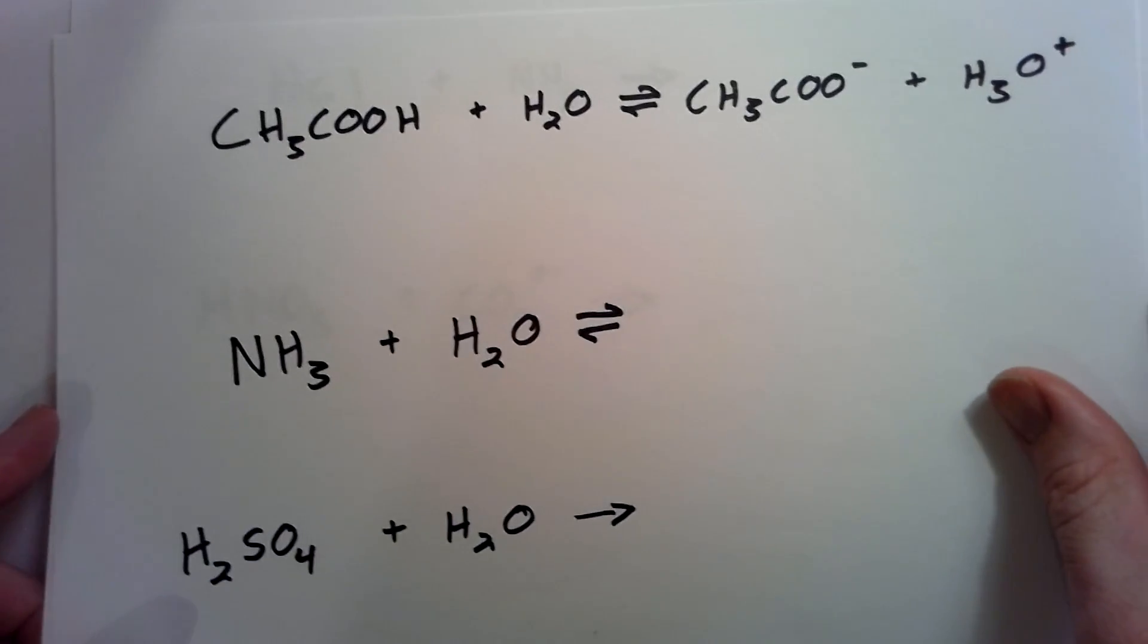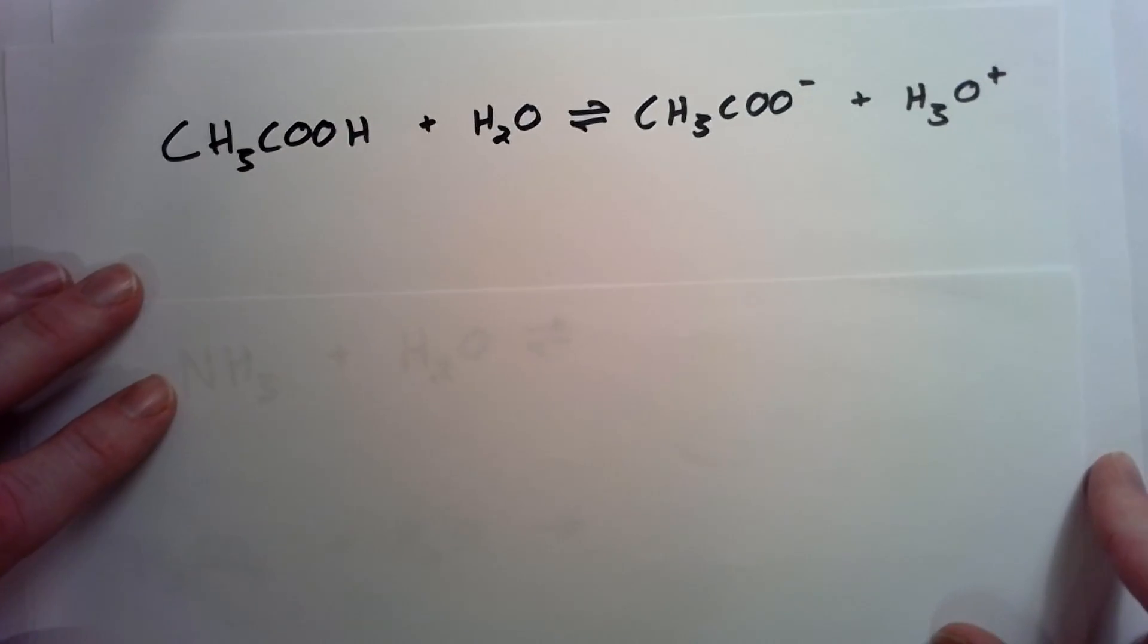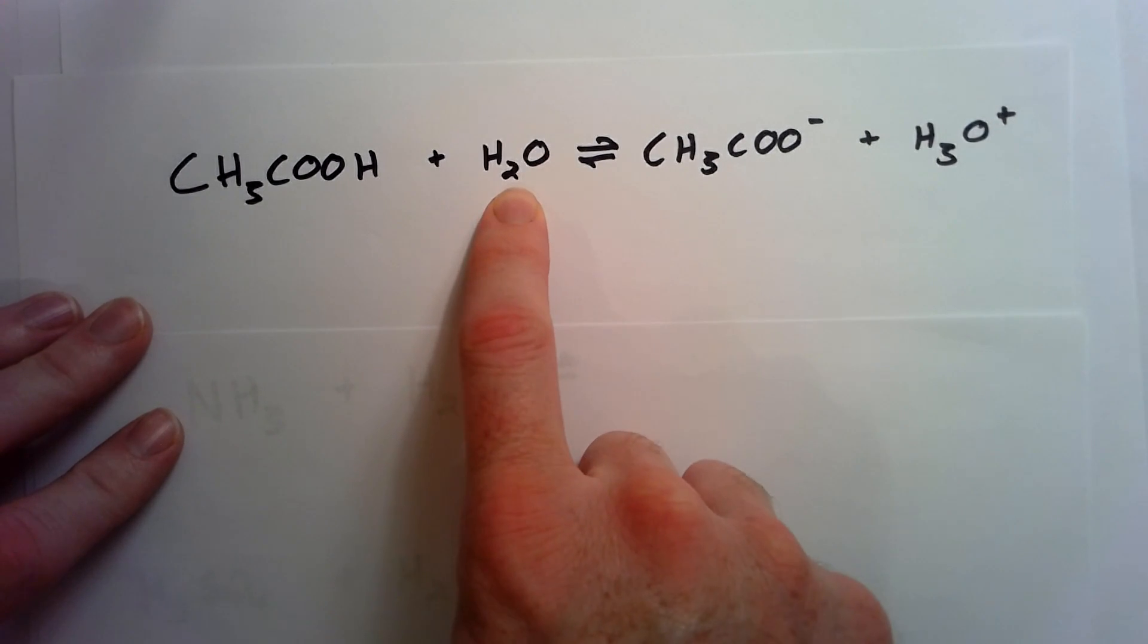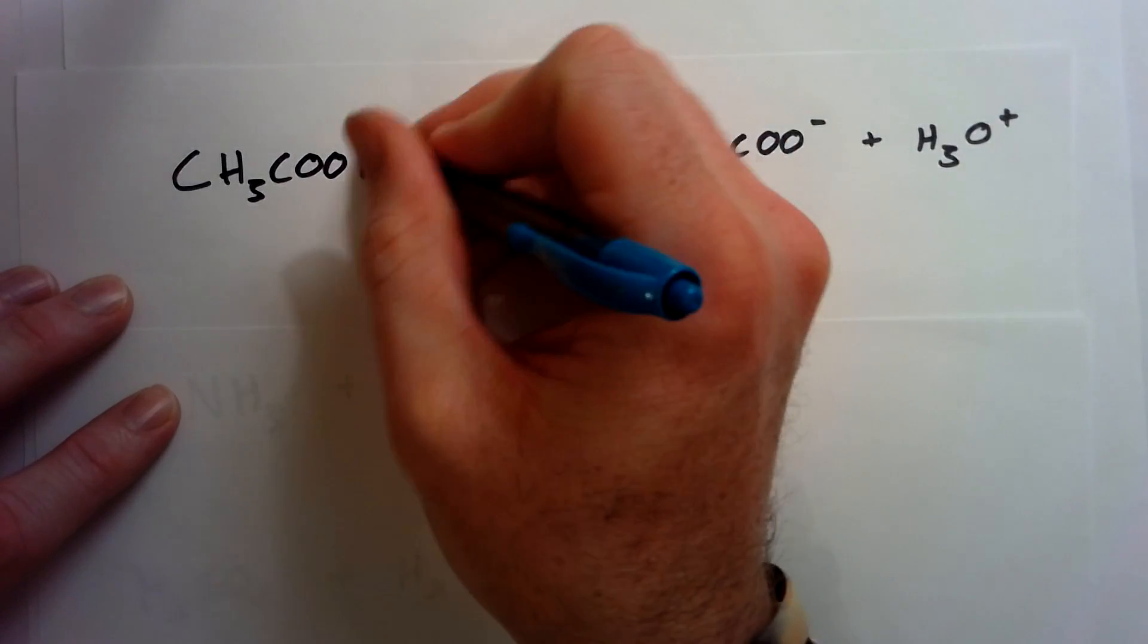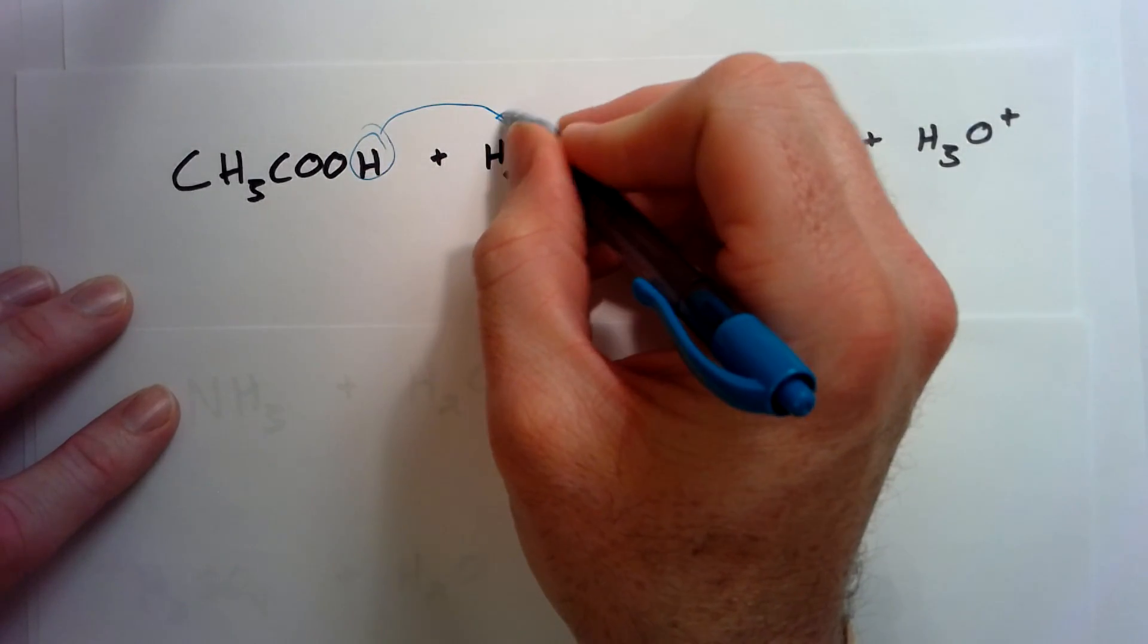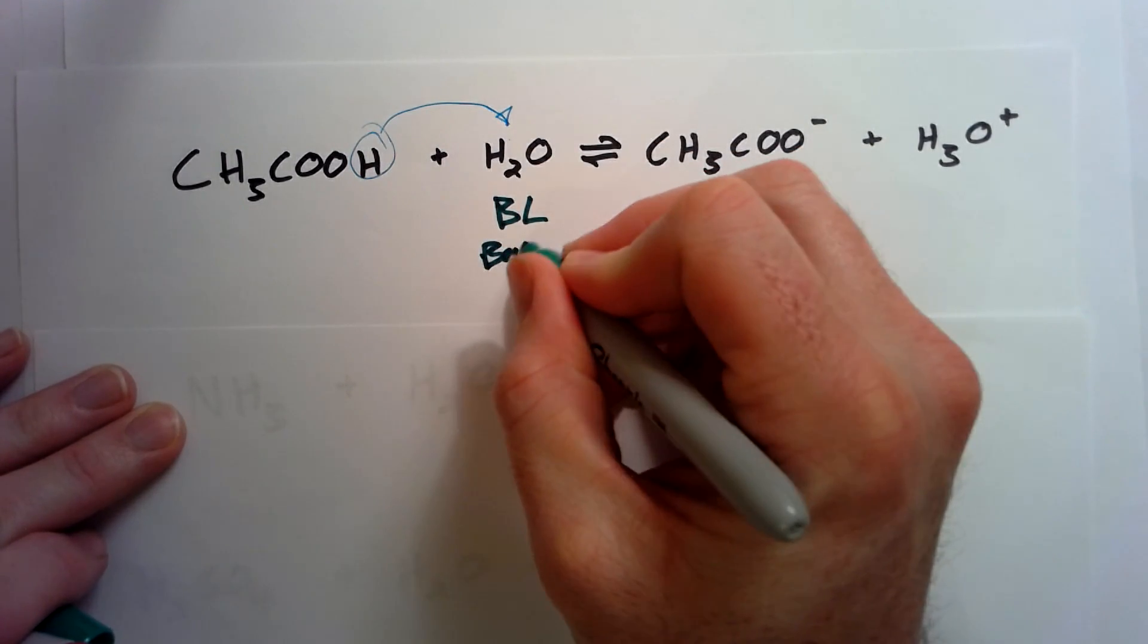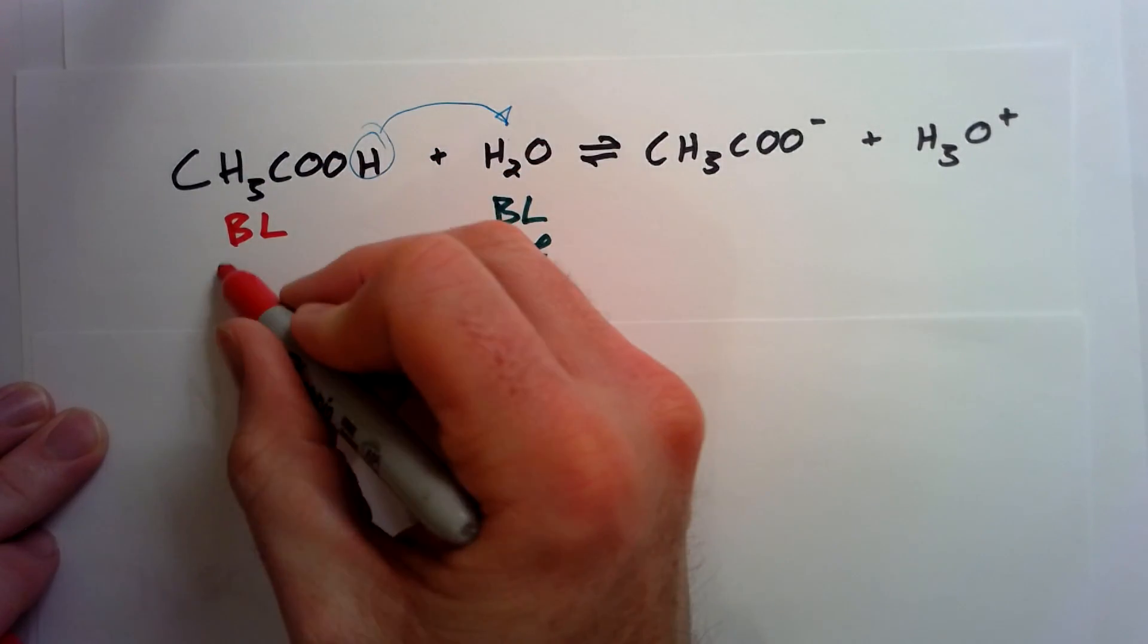Let's take a look at some examples. If we have acetic acid, CH3COOH right here, and it reacts with water. Remember, water, I said, was an amphoteric substance. It can act as an acid or a base. What's going to happen is that this proton is going to be given to the water, and this water is going to receive it. So if the water receives it, it is going to be a Bronsted-Lowry base, and this is our Bronsted-Lowry acid.